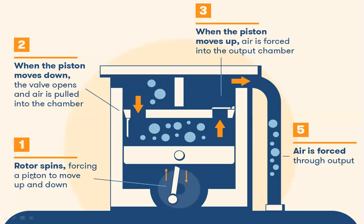This is a typical rotary compressor. When the rotor spins, it forces the piston to move up and down. When the piston moves down, the inlet valve opens and air or fluid enters. When the piston goes up, the discharge is open and the inlet is closed, then the air is forced through the output. So the cycle is: inlet chamber, compression, outlet chamber. This is another type of compressor.